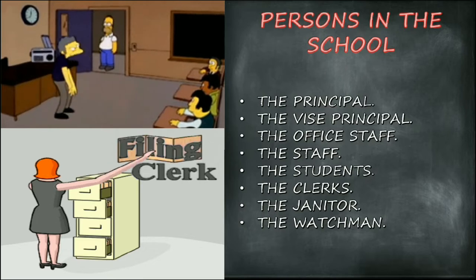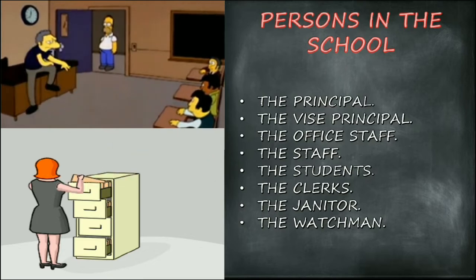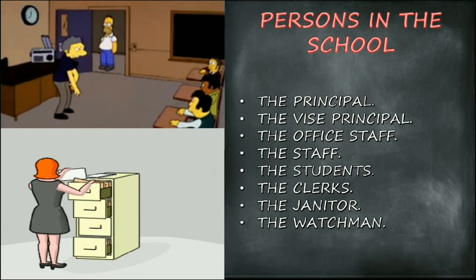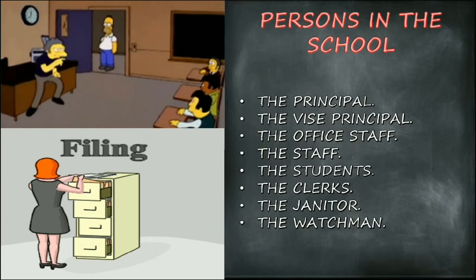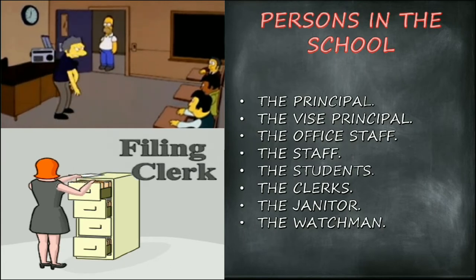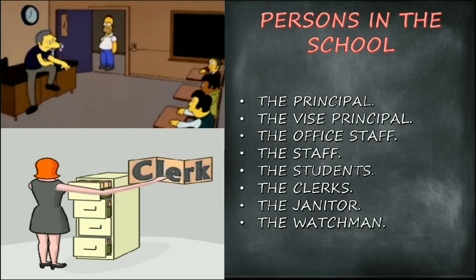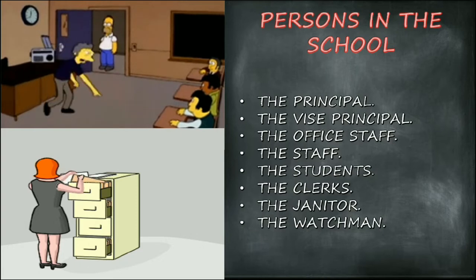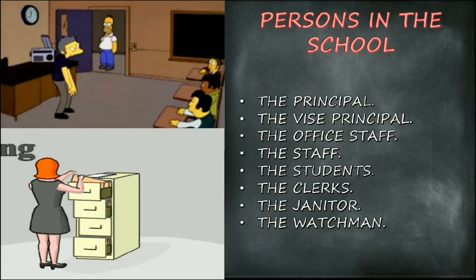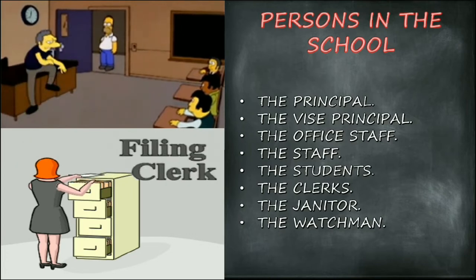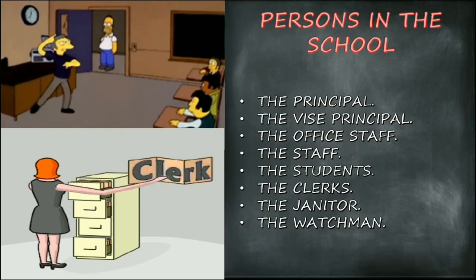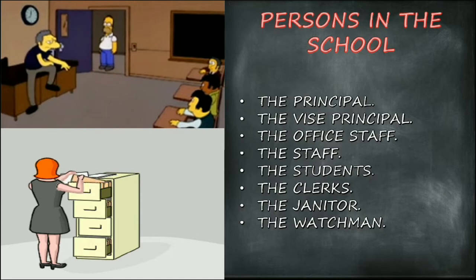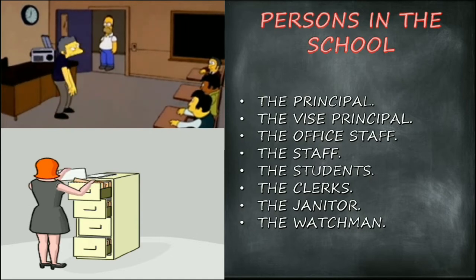Persons in the school: the principal is the main person who takes care of all the children and concentrates on both the administrative line and the education line. The vice principal is a person who assists the principal and also takes care of academics as well as administration. Mostly the vice principal will concentrate on the administration side.